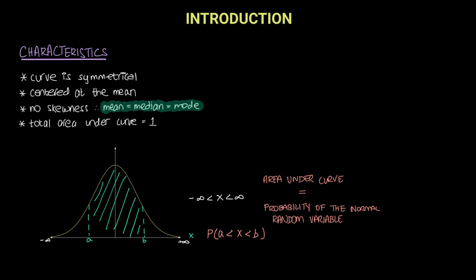Secondly, the curve is centered at the mean. This center point of the curve is at the mean, denoted as mu (μ), and the curve has its peak at the mean. Also, this curve has no skewness — it is neither positively nor negatively skewed. When there is no skewness, the mean, median, and mode are all equal. Therefore, this mean is equivalent to the median, which is equivalent to the mode.